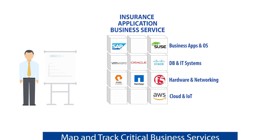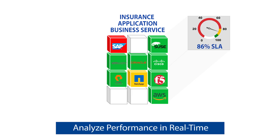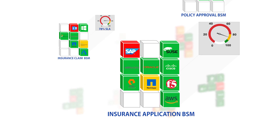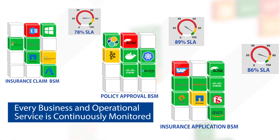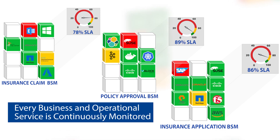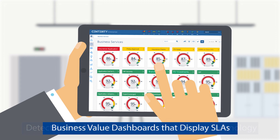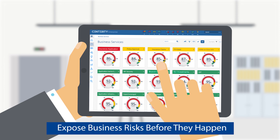What if that platform could automatically map and track Safe Harbor's critical business services, like insurance applications, and analyze performance in real-time, including user experience, network traffic, and even cybersecurity information, as executive SLA dashboards for Luke and his colleagues? Imagine the speed of IT ops when every business and operational service is continuously monitored, and related details are just a mouse click away. Imagine the power of business value dashboards that display SLAs, detect anomalies with AI and machine learning technology, and expose business risks before they happen.